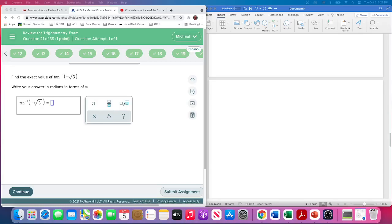This is question 21, and we're finding the exact value for an inverse tangent. The input into an inverse tangent is a value of a tangent, and the output is the angle.